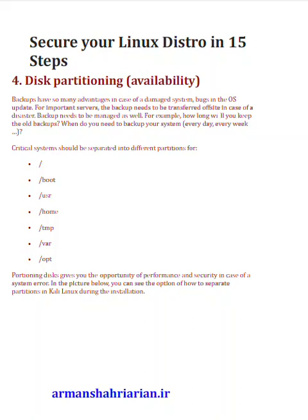Critical systems should be separated into different partitions: /, /boot, /usr, /home, /tmp, /var, and /opt. Partitioning disks gives you the opportunity for performance and security in case of a system error. In the picture below, you can see the option of how to separate partitions in Kali Linux during installation.